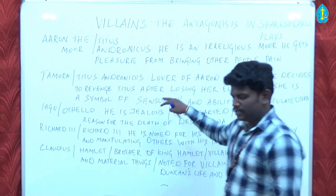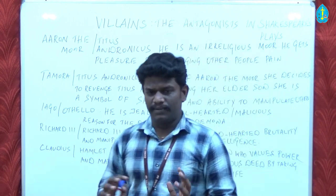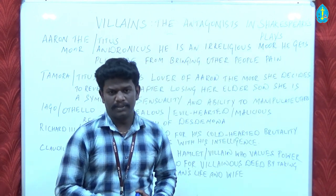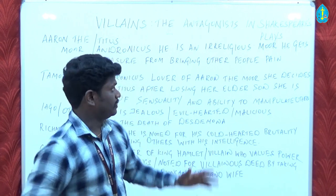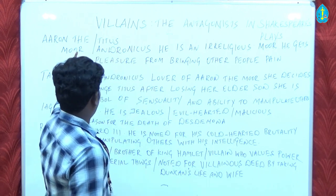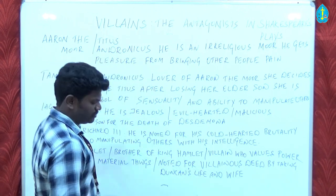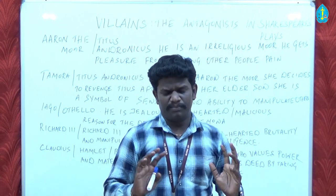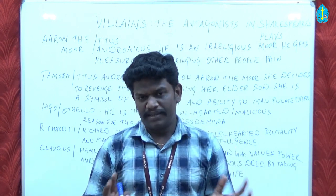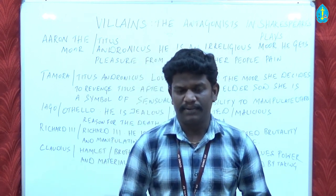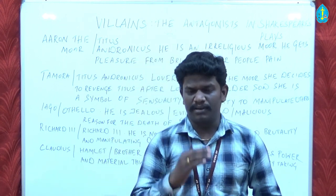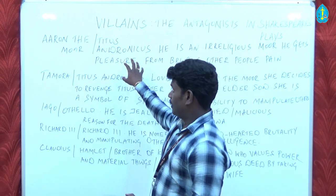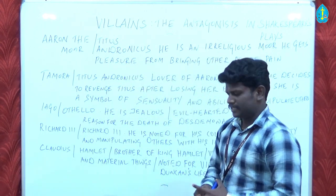This particular girl is the symbol of sensuality and the symbol of manipulating others. She is a very, very brutal villain and very equal to the character called Aaron the Moor. These both characters play a very dominant role and they were very, very brutal villains in the play called Titus Andronicus.